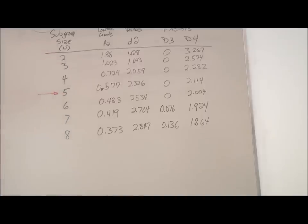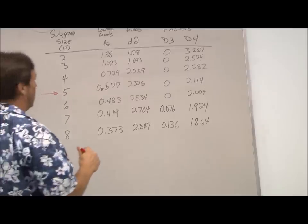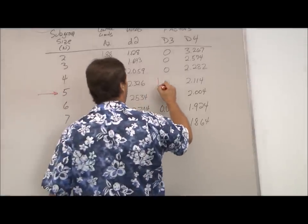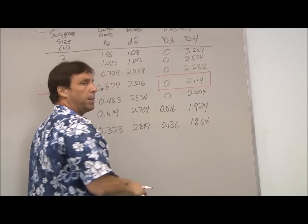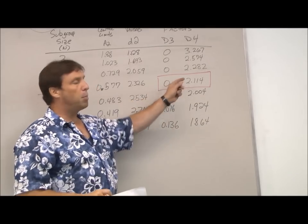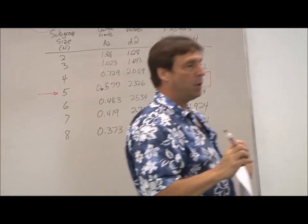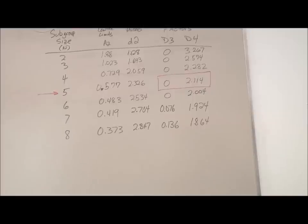So make sure you don't take the number of samples, but the subgroup is how many were averaged together to get our mean for each sample as the subgroup size. So that's five. This time, we're interested in our D3 and D4. So we want these two factors here. So our D3 is zero. Our D4 is 2.114. We'll use those.